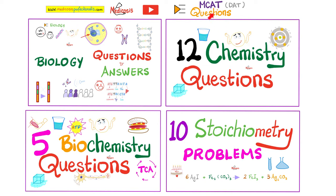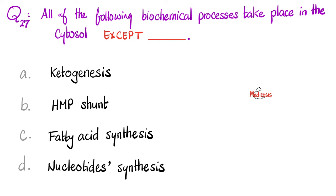There is a playlist on my channel called MCAT Questions — you'll find tons of biology, chemistry, and biochemistry questions, and soon we will add organic chemistry and physics as well. Here is question number 27: all of the following biochemical processes take place in the cytosol, except...